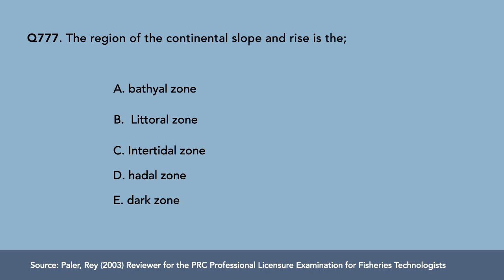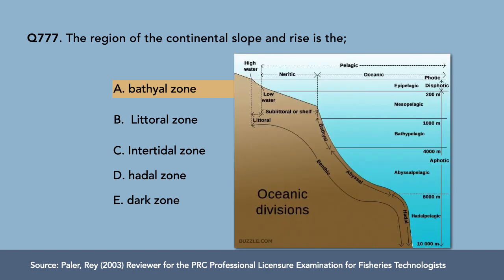Question 7: The region of the continental slope and rise is the — A) bathyal zone, B) littoral zone, C) intertidal zone, D) hadal zone, E) dark zone. The correct answer is letter A, bathyal zone. These terminologies refer to oceanic divisions. The littoral and intertidal zones are in shallow regions; the hadal zone is the deepest. Based on the continental slope and rise, the answer is the bathyal zone.